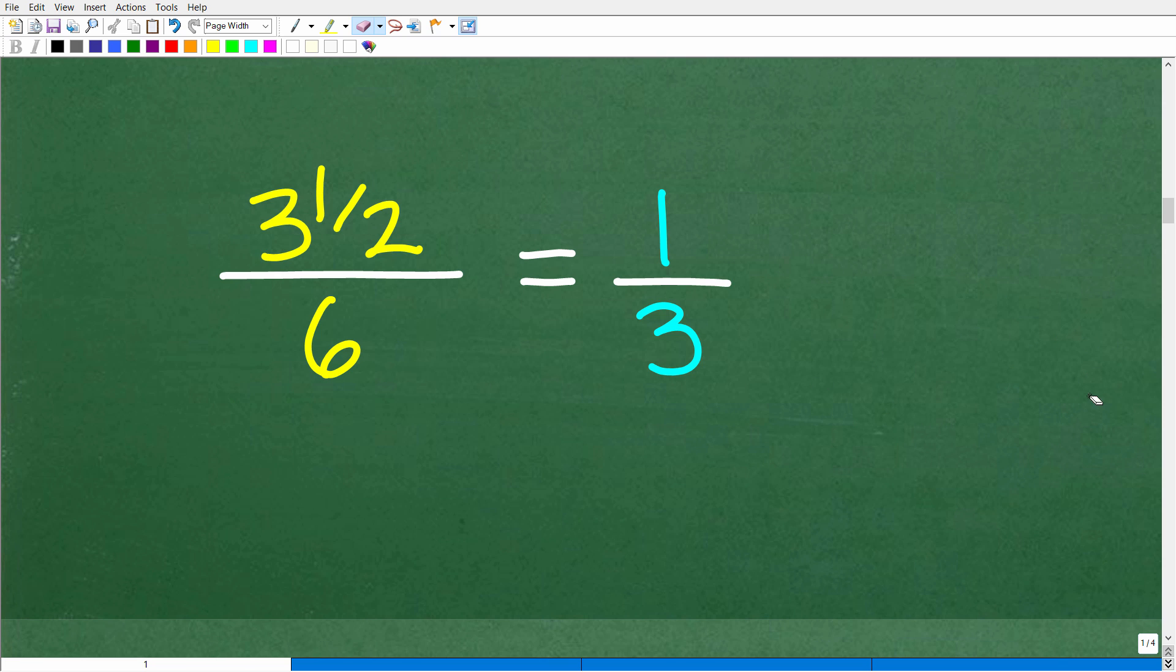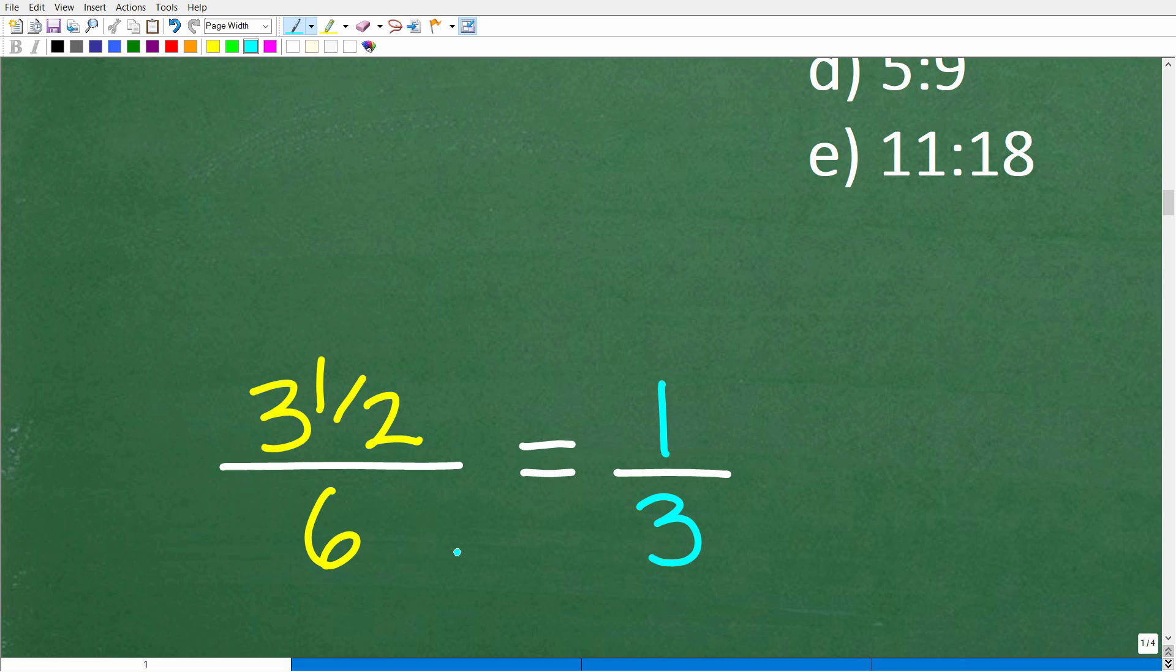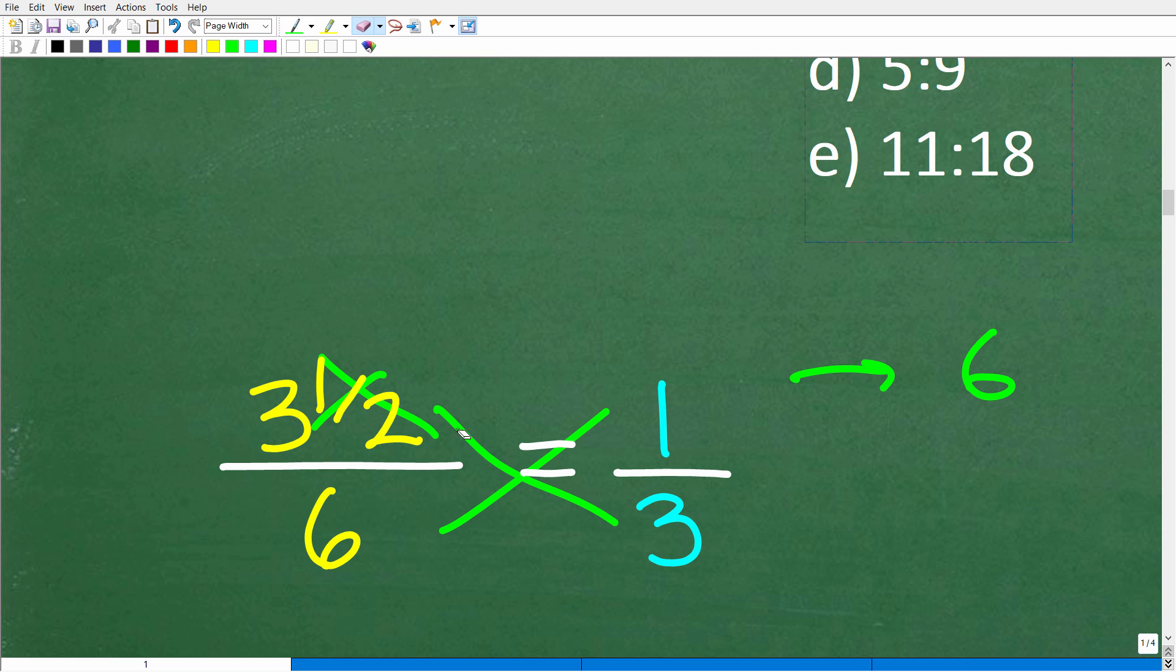3½ days to 6 days, and we can drop the days for the purposes of just looking for the right answer. Let's test the first option. The first option here is 1 to 3. We can express that as the fraction 1/3. But if these two here are in the same ratio, the cross product will be equal. And you're going to see that this cannot be the case because 6 times 1 is 6, and 3 times 3½ is not going to be 6. It's going to be well over 9. So you can see clearly that this is not going to work out. There's no way that this is in a 1 to 3 ratio.